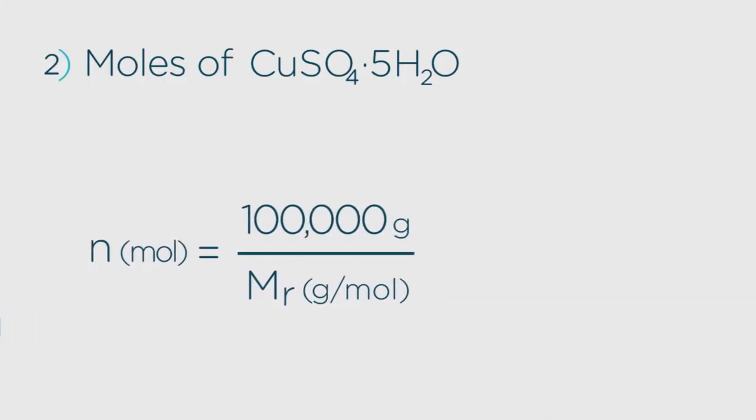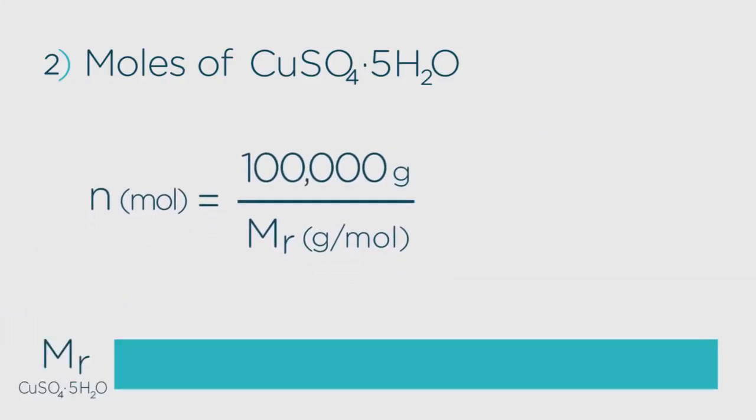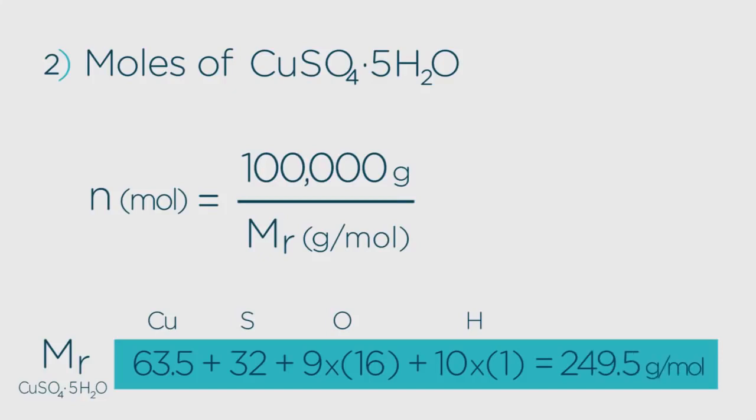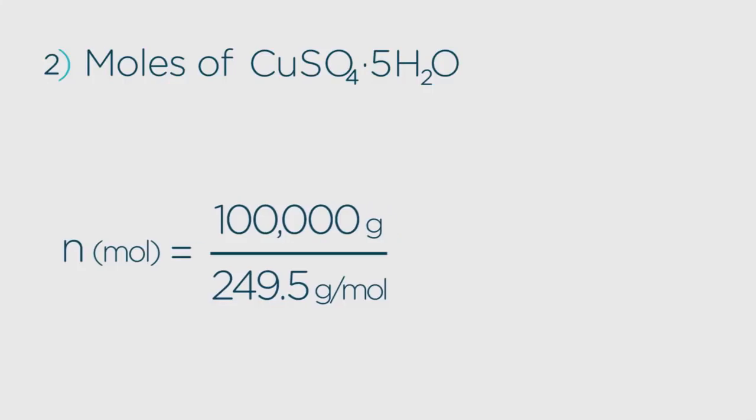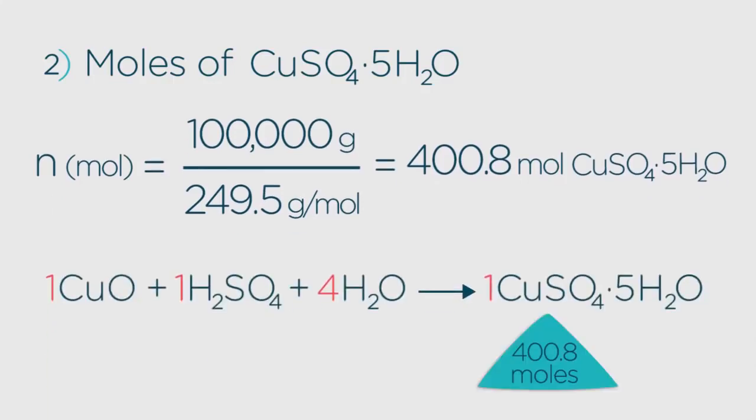Using your periodic table, you can work out that this is 63.5 for the copper atom, plus 32 for the sulfur, 9 times 16 for the oxygens, and 10 times 1 for the hydrogens, altogether making 249.5 grams per mole. 100,000 divided by 249.5 equals 400.8 moles. So this is the number of moles of copper oxide we need to add to the acid.